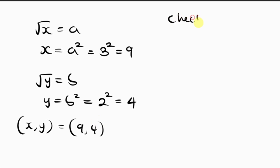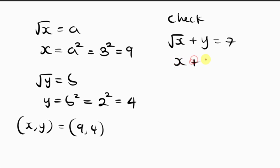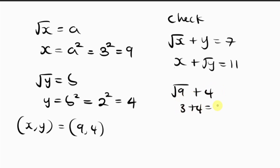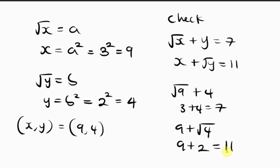Let's verify. Checking the first equation: the square root of x plus y equals the square root of 9 plus 4 equals 3 plus 4 equals 7. Checking the second equation: x plus the square root of y equals 9 plus the square root of 4 equals 9 plus 2 equals 11. Both answers check out correctly.